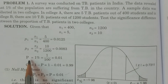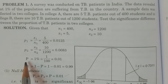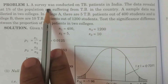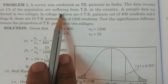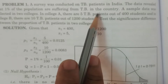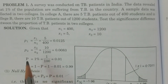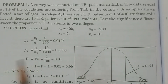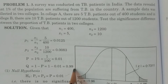Capital P is given in the first statement: the survey revealed that 1% of the population are suffering from TB. So capital P equals 1%, which is 1 by 100 equals 0.01. Capital P1 equals capital P2 equals capital P equals 0.01. Calculate Q: Q equals 1 minus P equals 1 minus 0.01 equals 0.99.